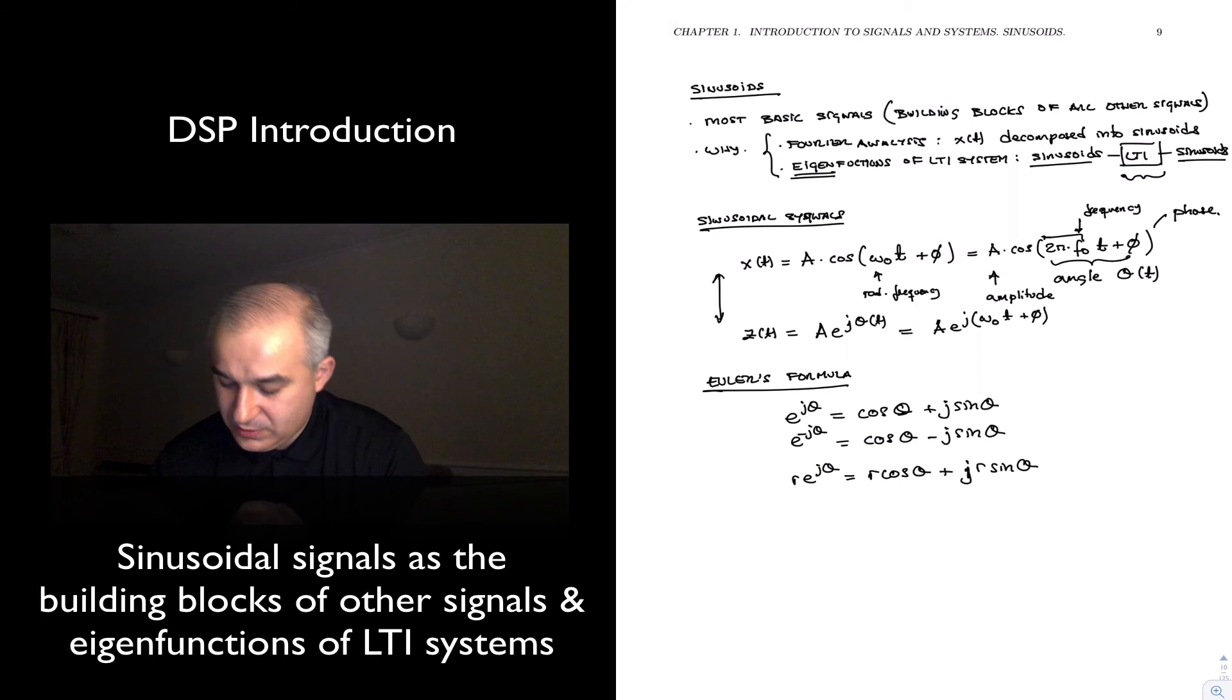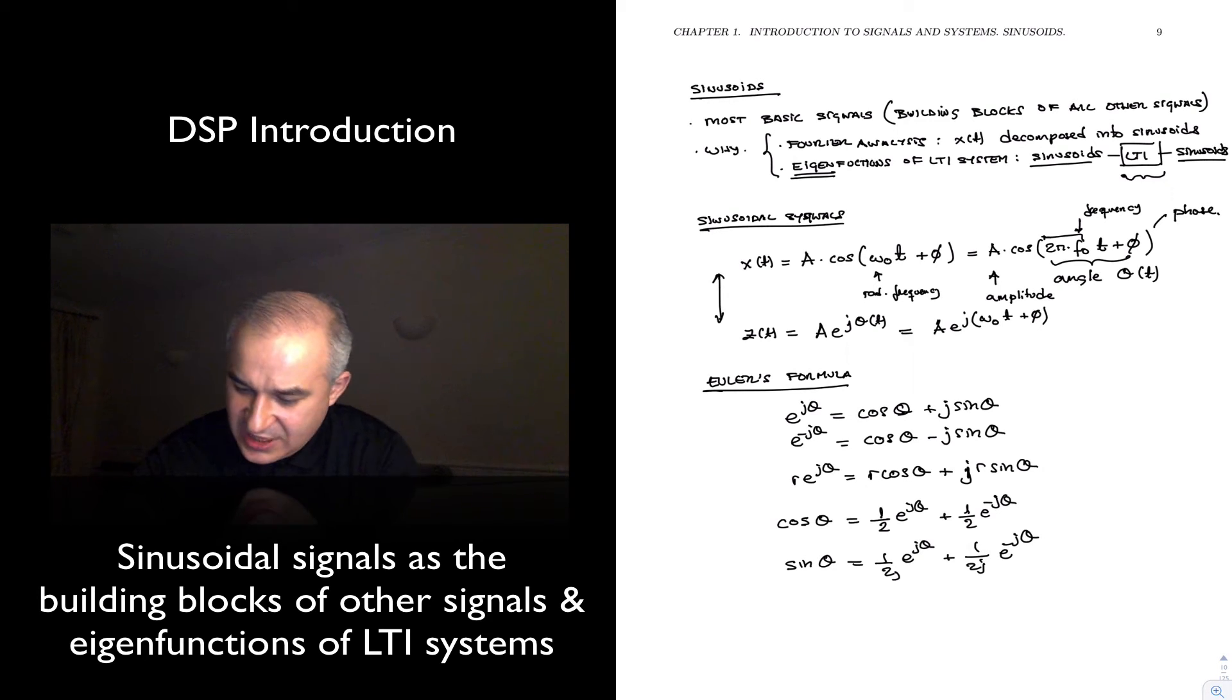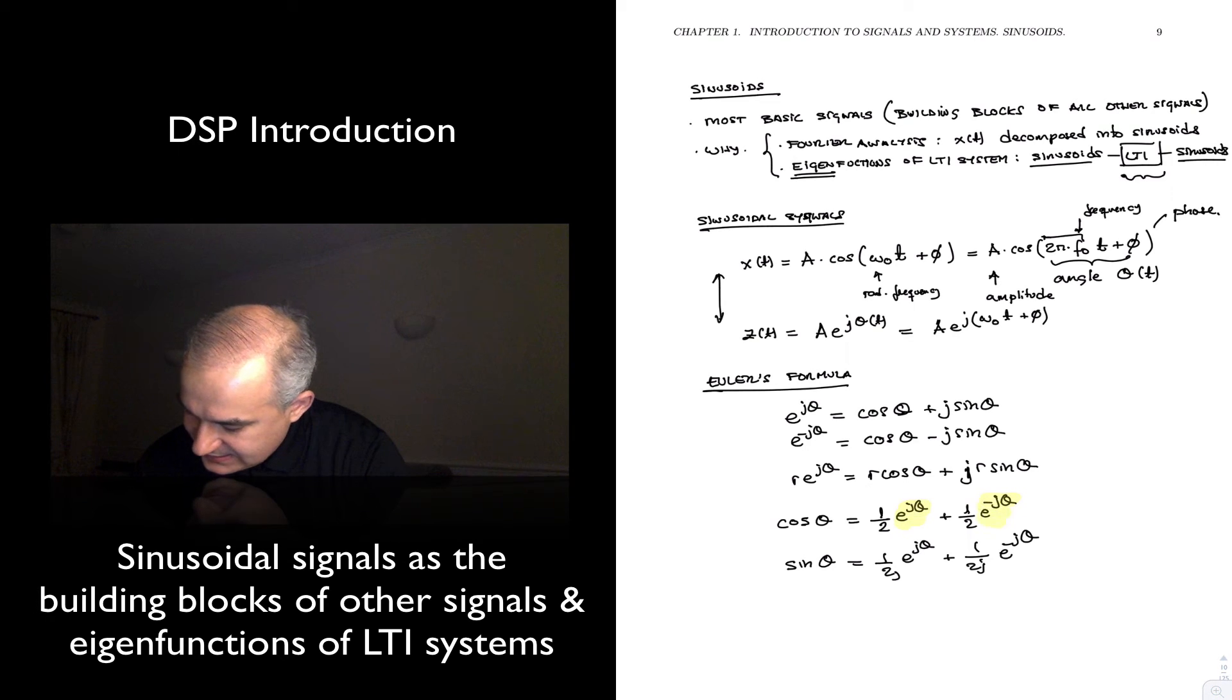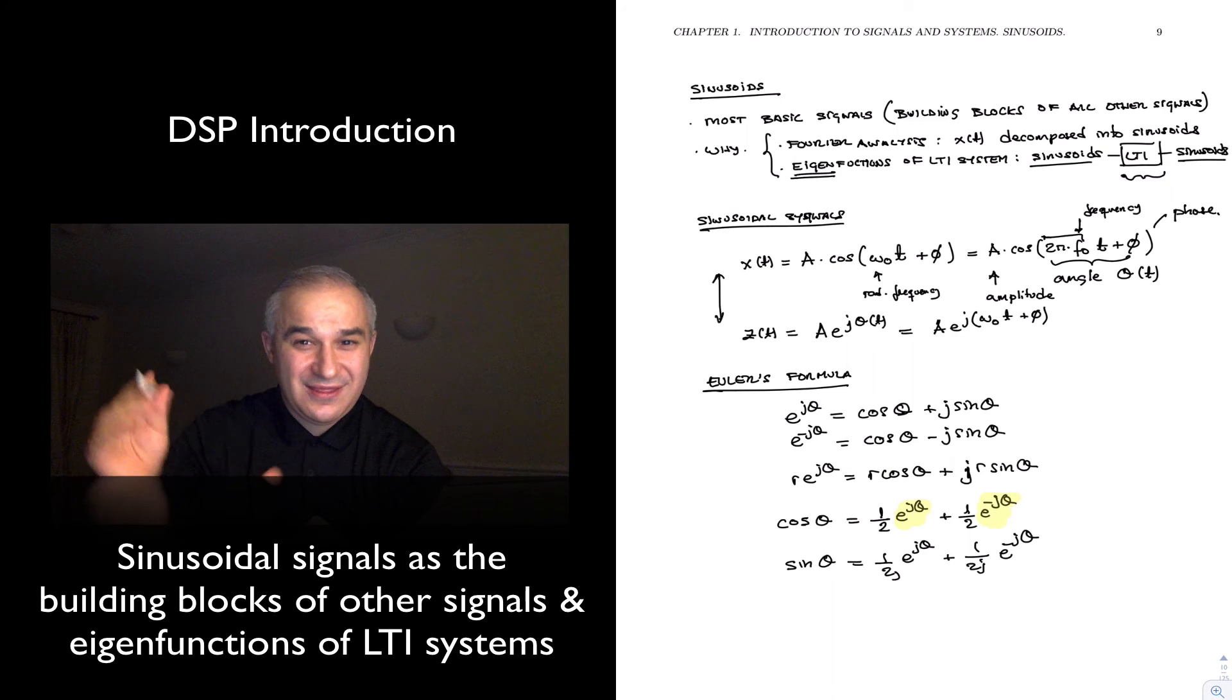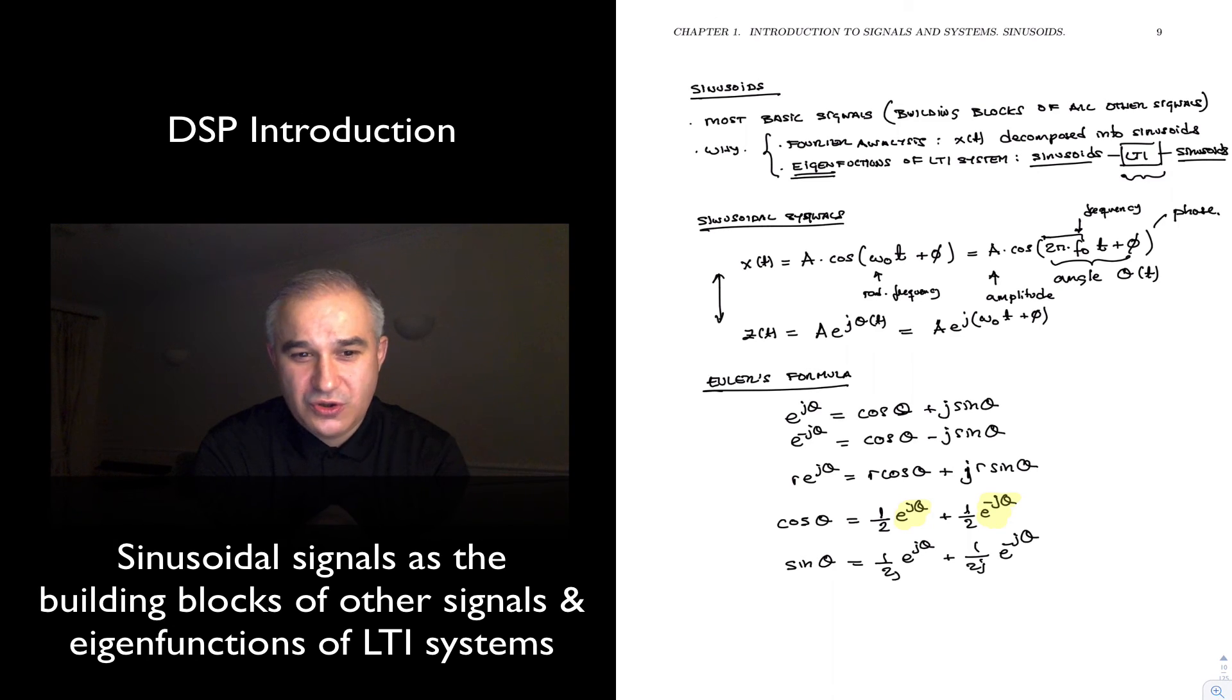And with this, we are going to be able to see that a cosine of theta is actually built of these two complex exponentials, plus one half e to the j theta plus one half e to the minus j theta, or a sine is one half j e to the j theta plus one half e to the minus j theta. So we are going to see that actually these e to the j theta exponentials, or e to the j theta with theta being a function of time, are the most fundamental building blocks of all the signals.